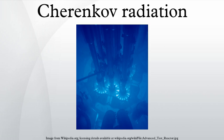In the Pierre Auger Observatory and other similar projects, tanks filled with water observe the Cherenkov radiation caused by muons, electrons and positrons of particle showers which are caused by cosmic rays. Cherenkov radiation can also be used to determine properties of high-energy astronomical objects that emit gamma rays, such as supernova remnants and blazars. This is done by projects such as STACEE, a gamma ray detector in New Mexico.